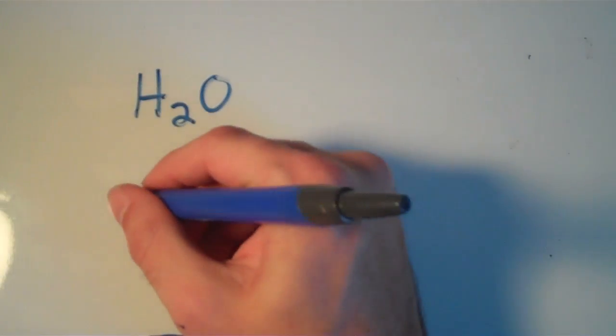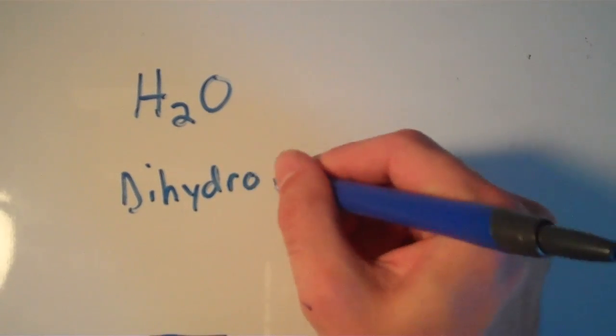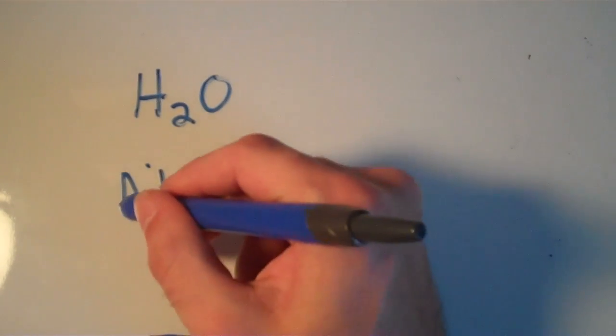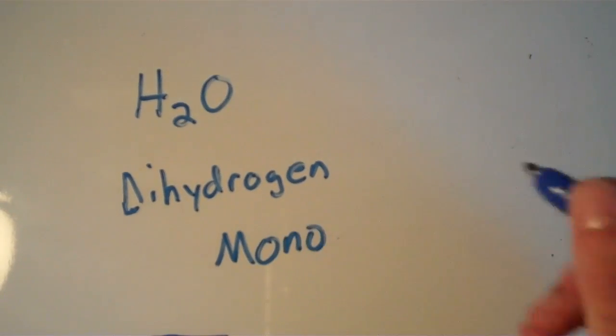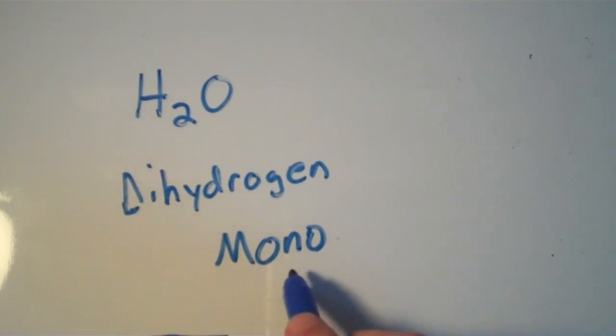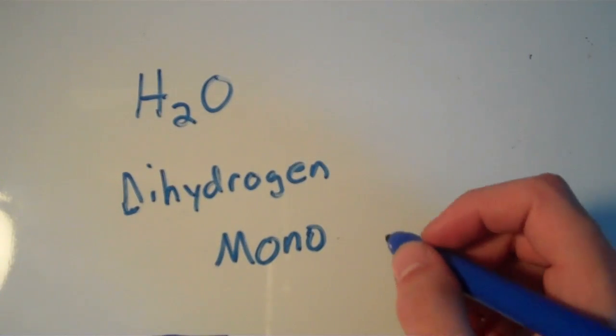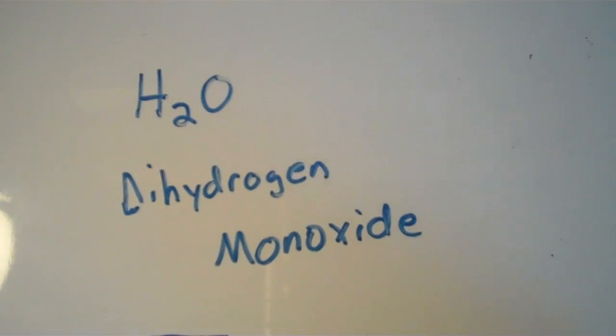We have two hydrogens, so that's going to be dihydrogen. And then we have one oxygen atom, so that's going to be monoxide. And since both the prefix ends with and the element begins with a vowel, we're going to drop the first O on mono, and we're just going to say monoxide instead of monooxide. So the systematic name for water is dihydrogen monoxide.